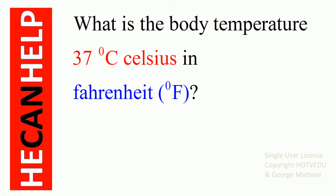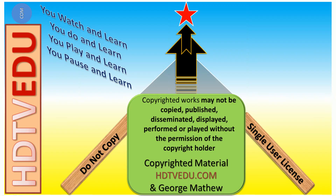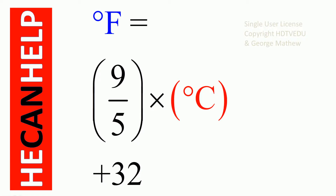What is the body temperature 37 degrees Celsius in Fahrenheit? To convert from degrees Celsius to Fahrenheit, we use 9 over 5 times the temperature in degrees Celsius plus 32.